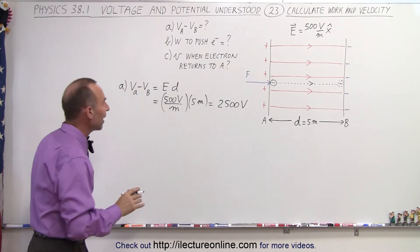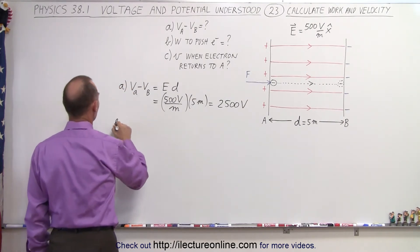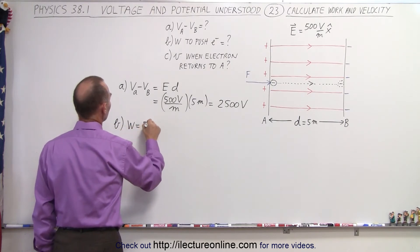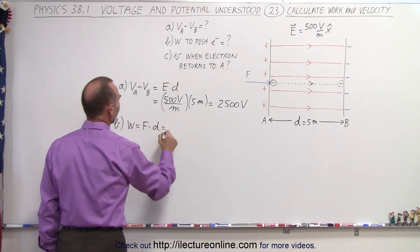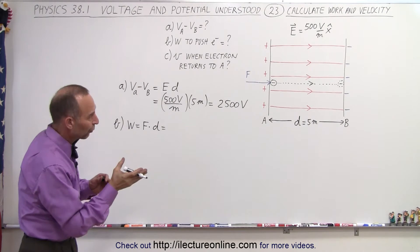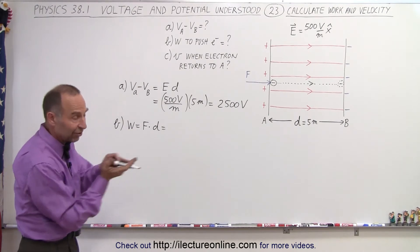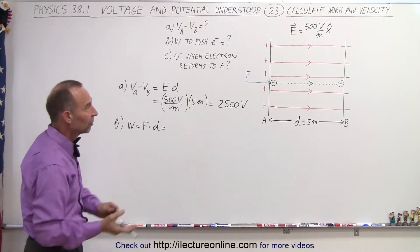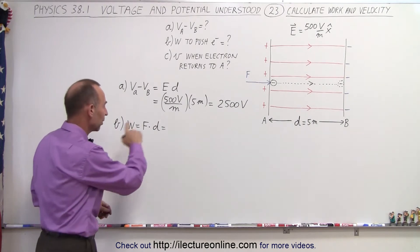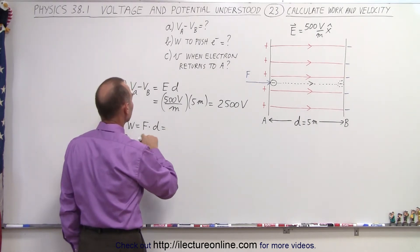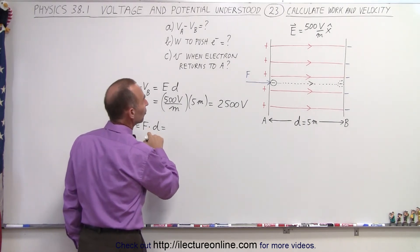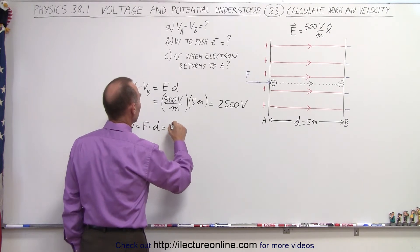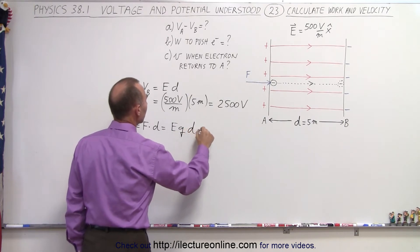Next we're going to find the work done. So for part B, the work done is equal to the force times distance, and of course the direction of the force and the direction of the displacement is in the same direction, so the angle between them is 0, the cosine of 0 is 1, so we don't have to worry about the cosine of theta. And the magnitude of the force is equal to the electric field strength times the charge times the displacement D.